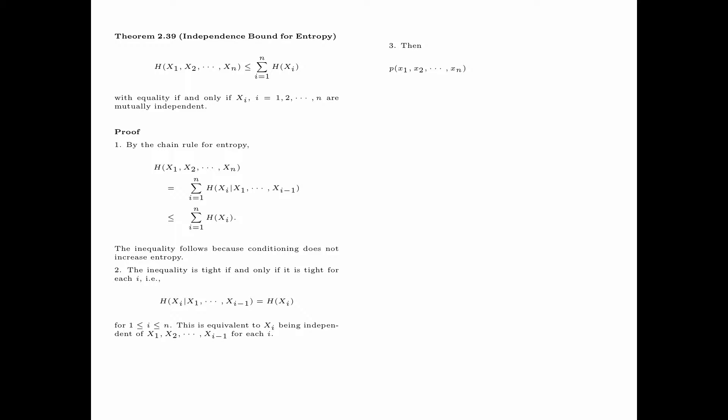Then the joint probability of X1, X2, up to Xn can be written as p(X1, X2, ..., Xn-1) times p(Xn), because X1 through Xn-1 is independent of Xn. In the same way, we can write p(X1, X2, ..., Xn-1) as p(X1, X2, ..., Xn-2) times p(Xn-1). So finally we have p(X1) times p(X2) all the way to p(Xn), for all X1, X2, up to Xn. That is, the random variables X1, X2, up to Xn are mutually independent.